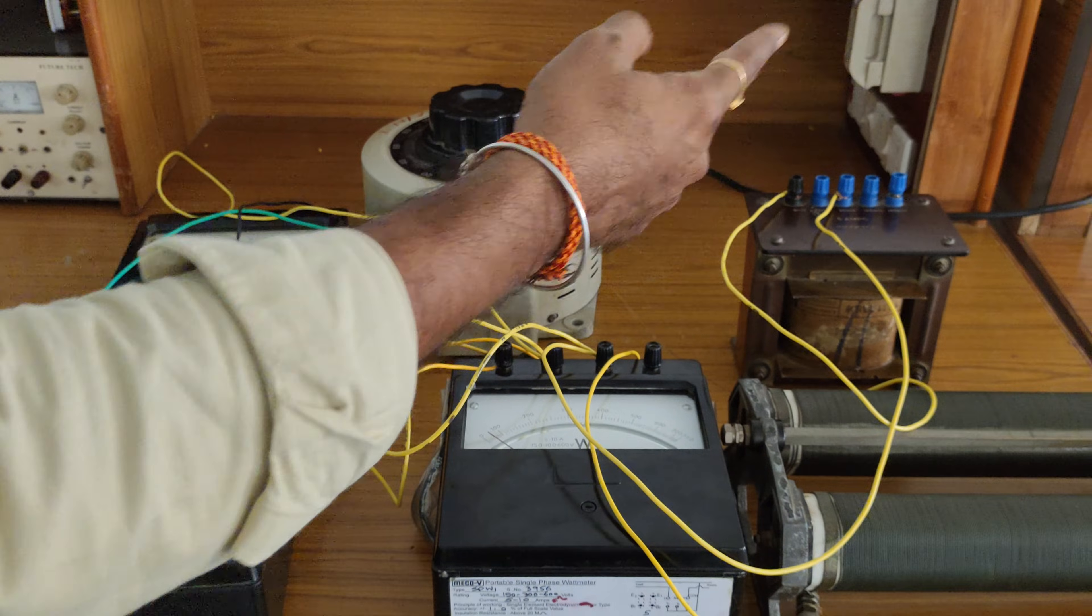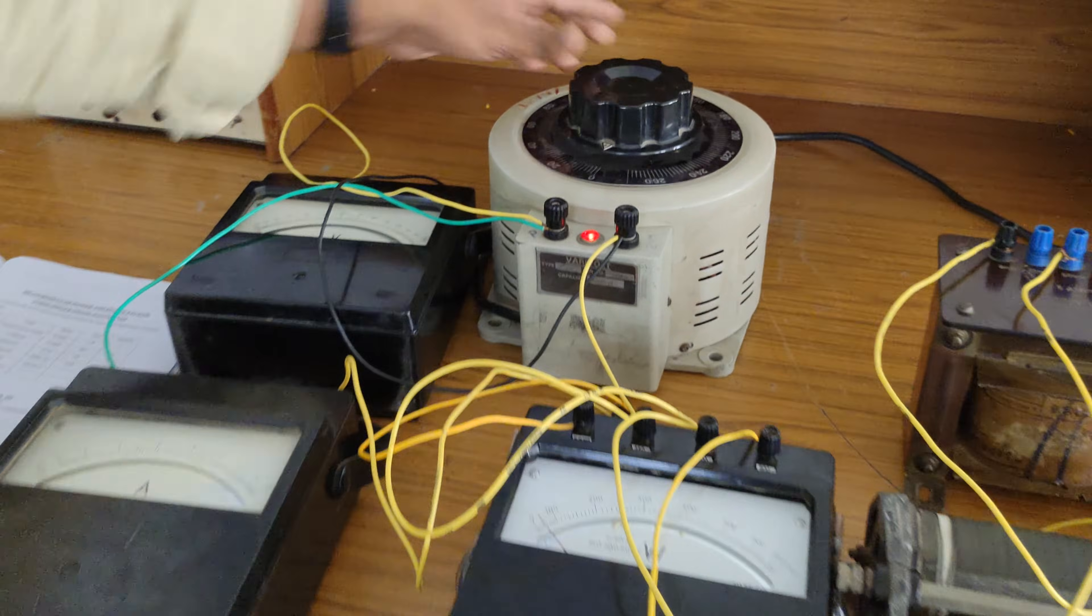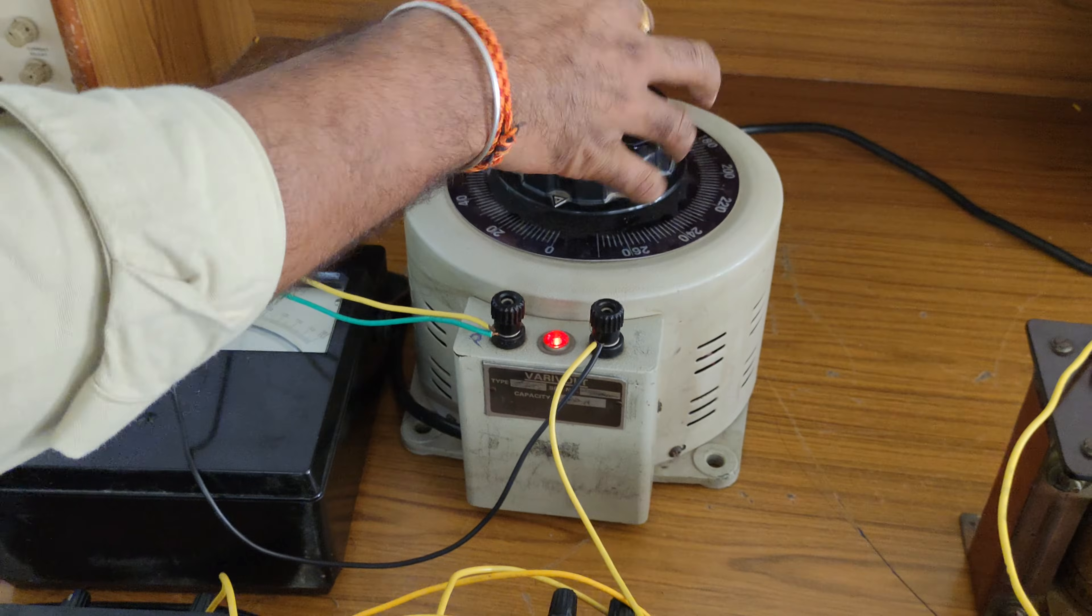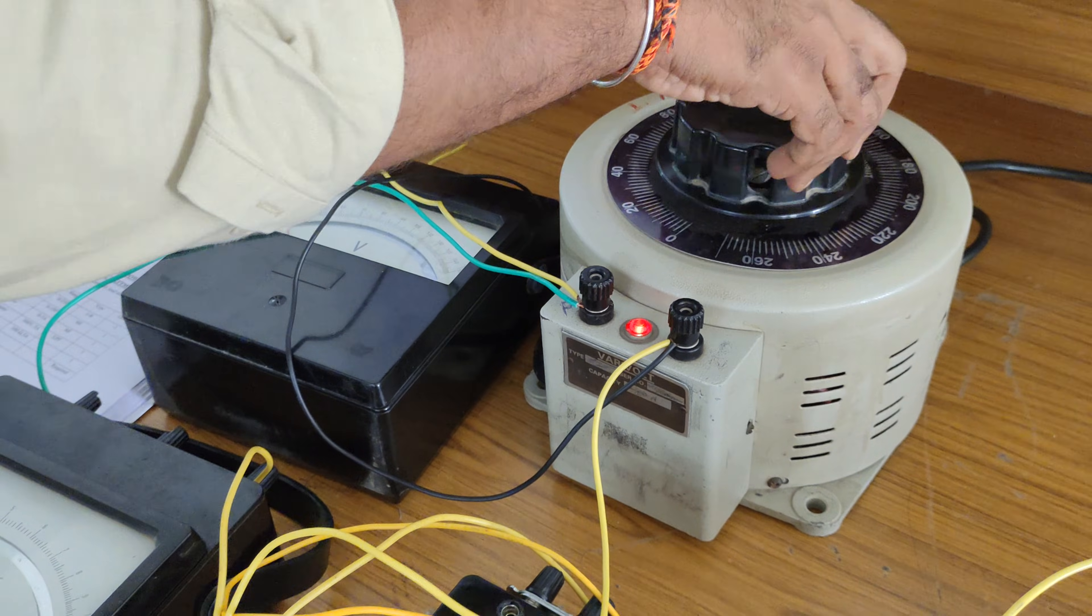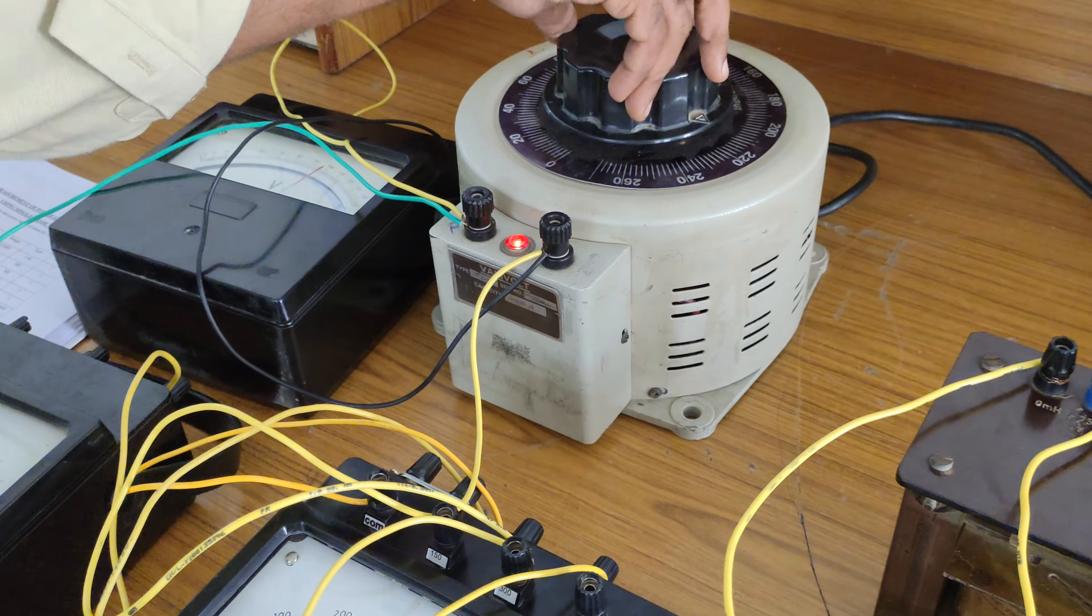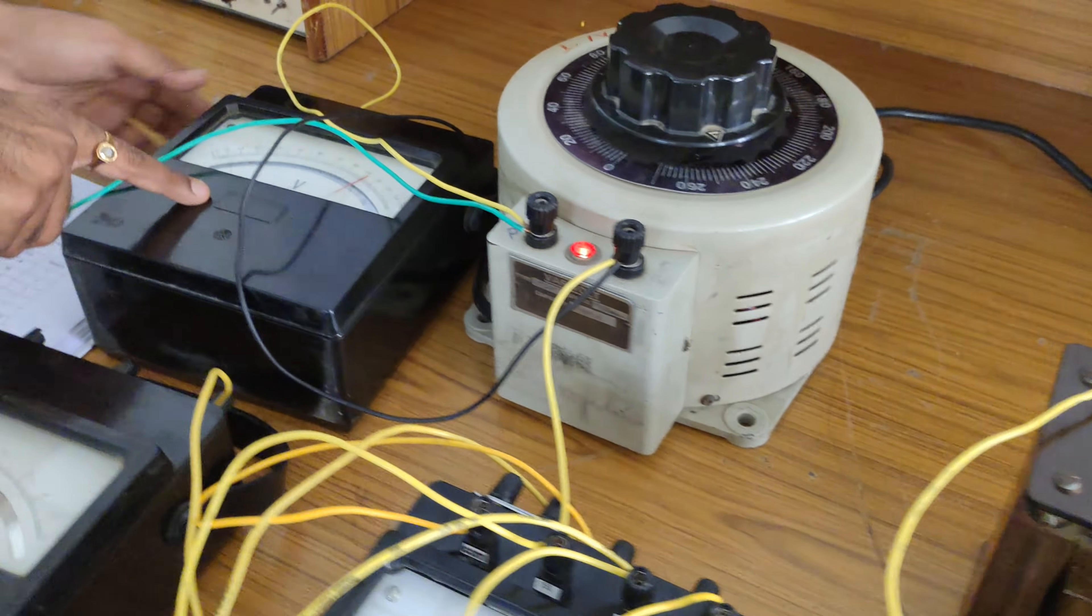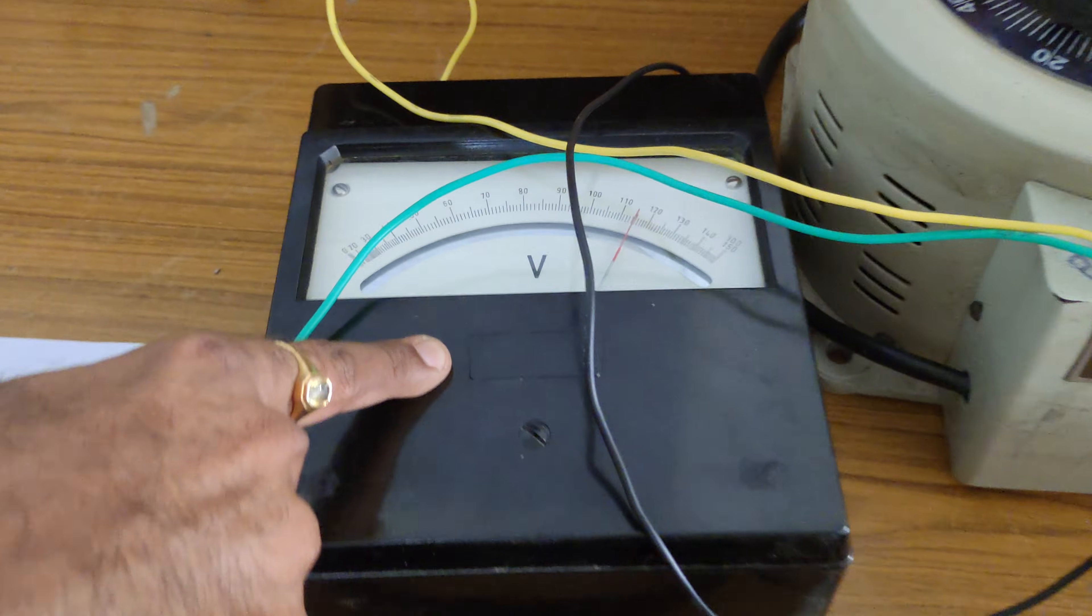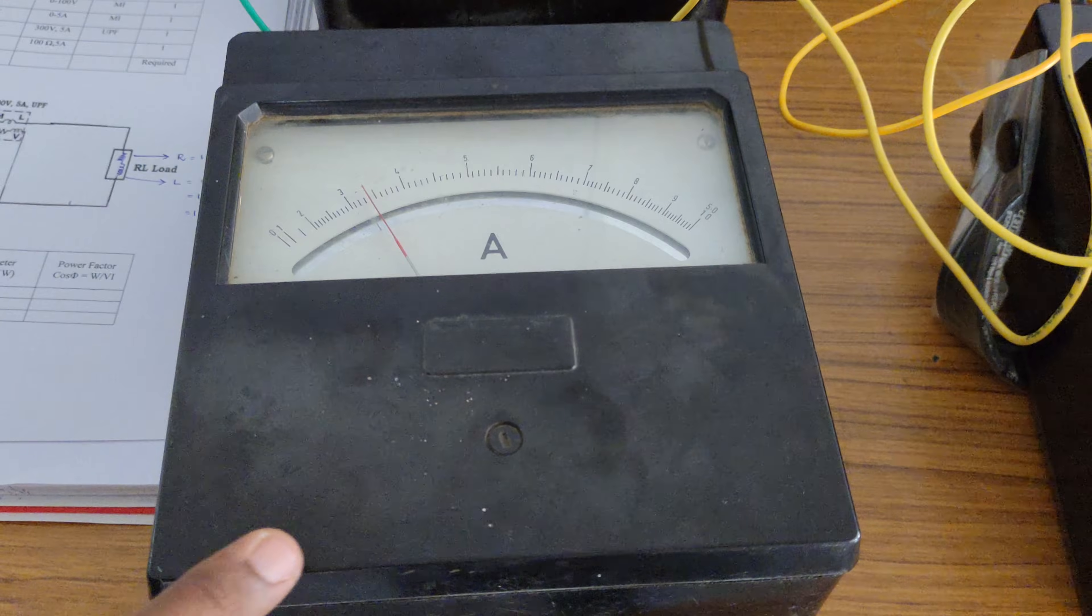By switch on your supply, we have to vary this variac here. By slowly varying this variac, just stick on to only this black colored part. I just want to vary this variac up to the level of 230 volts. I just want to apply 230 volts. This one I applied here is 230 volts.